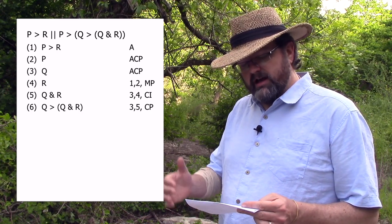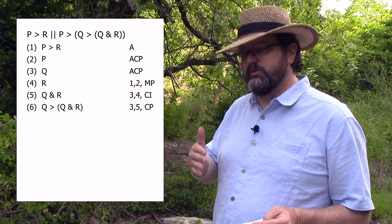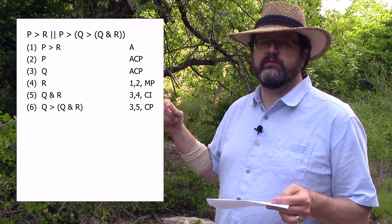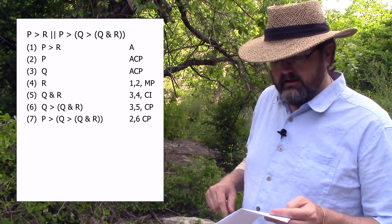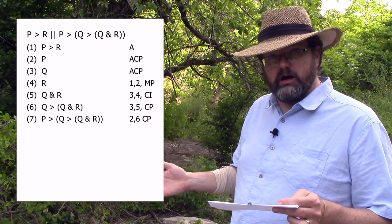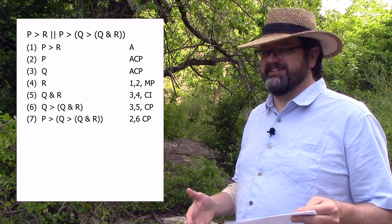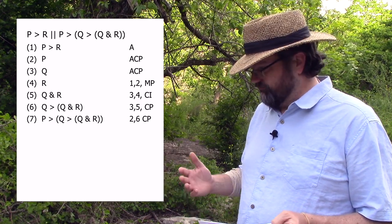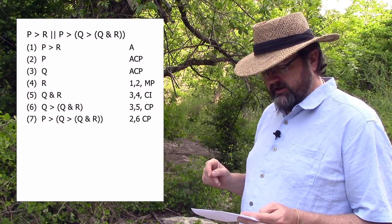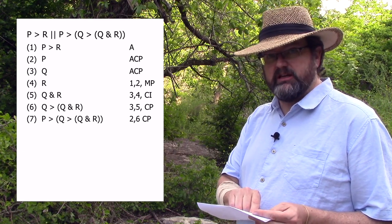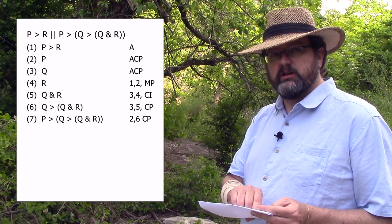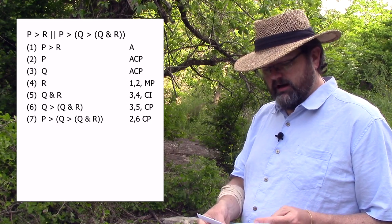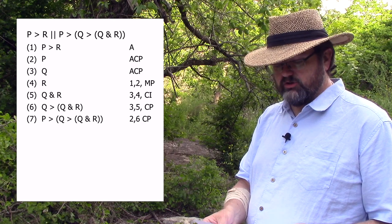Now 'if Q then Q and R' is an inference we made on the assumption of P. So we can infer another conditional: 'if P then if Q then Q and R.' The citation for conditional proof uses the first number as where we assumed P (line two), and the second number as where we drew the inference (line six). When you cite conditional proof, the first number is the assumption and the second is the line where you drew the inference.